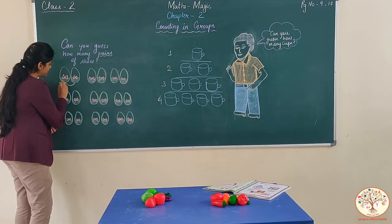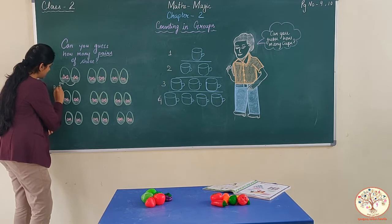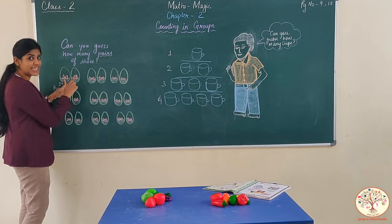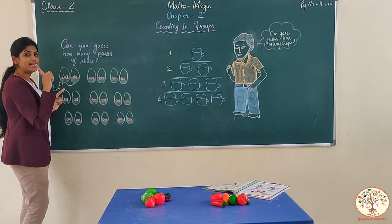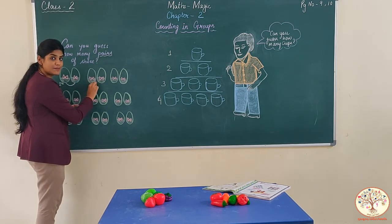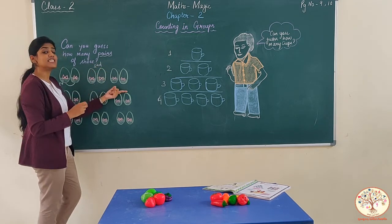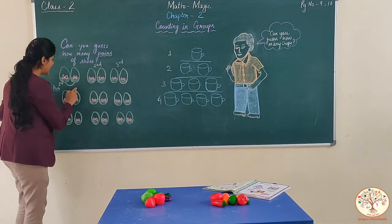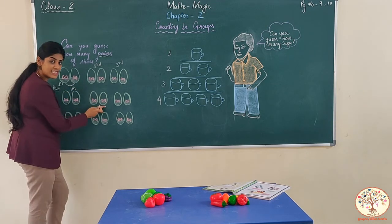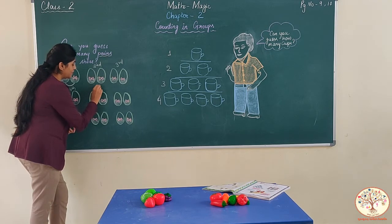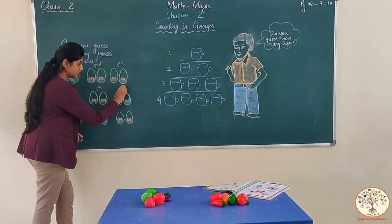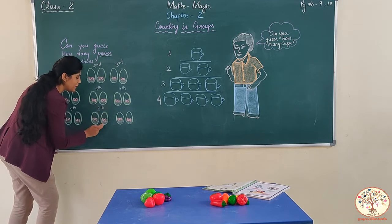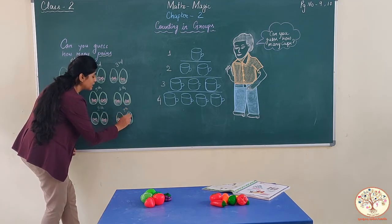This is the first pair. This is the second pair. This is the third pair. What about this — fourth pair. This is the fourth pair. This is the fifth pair. And counting goes on: sixth pair, seventh pair, eighth pair, and ninth pair.